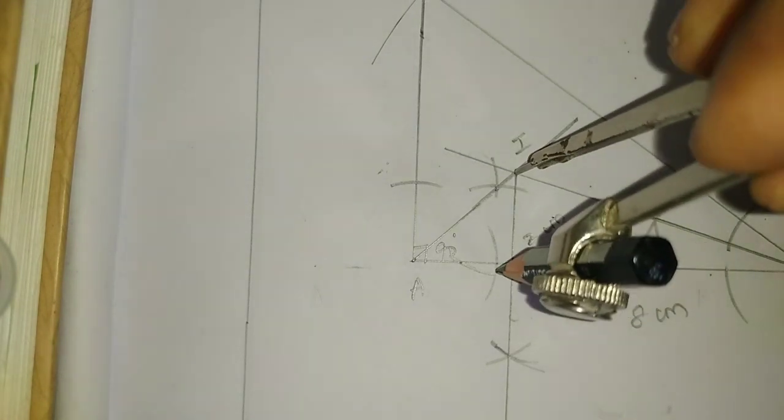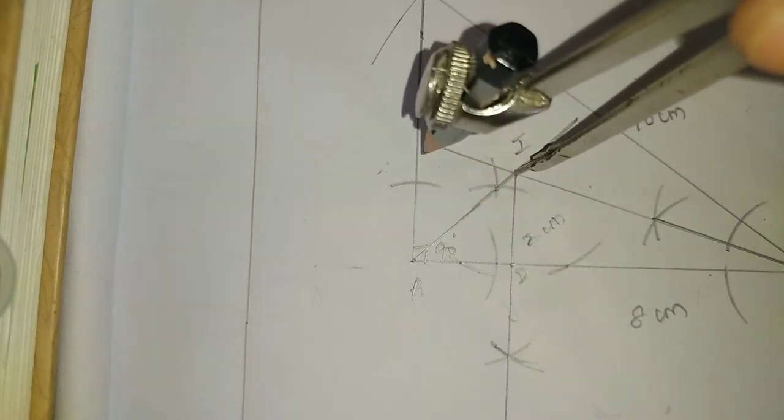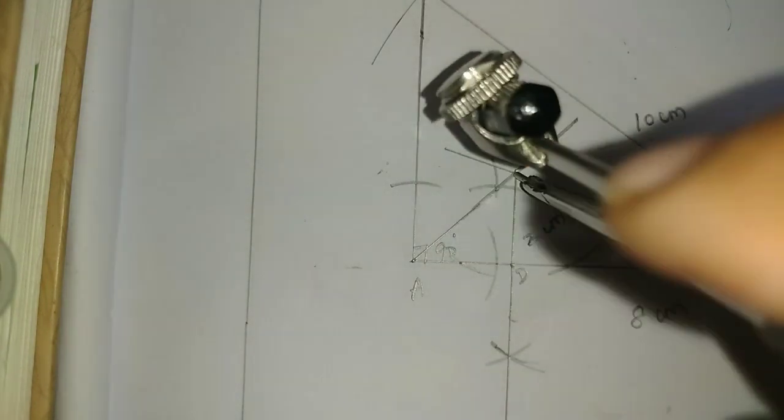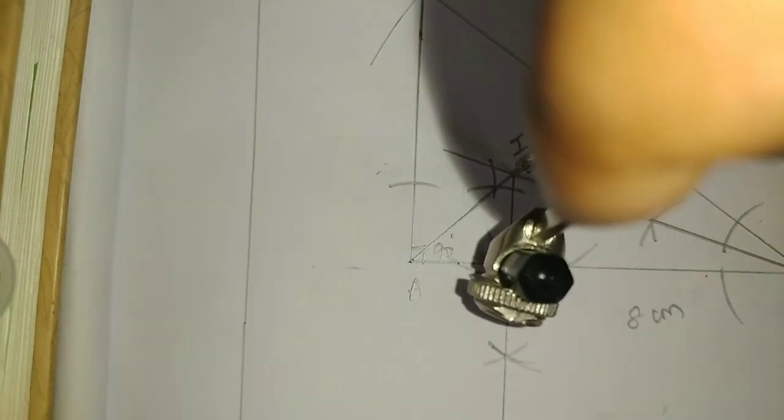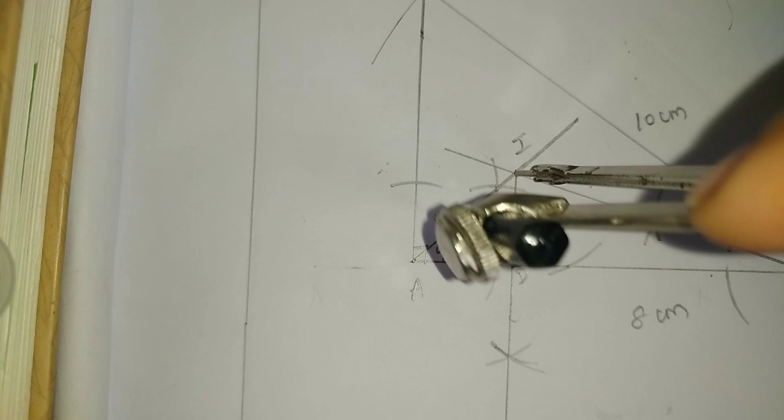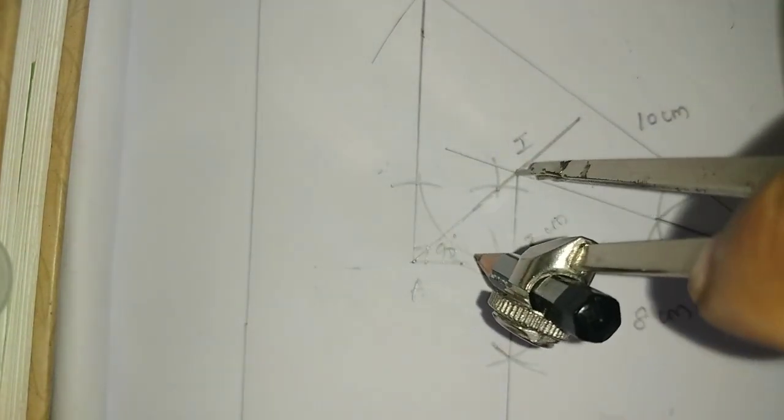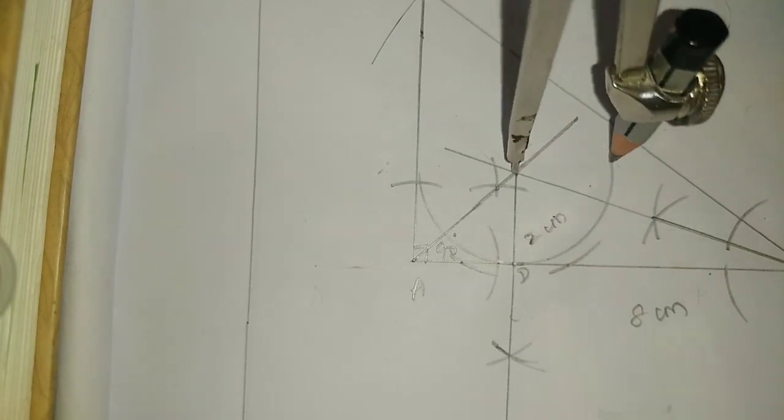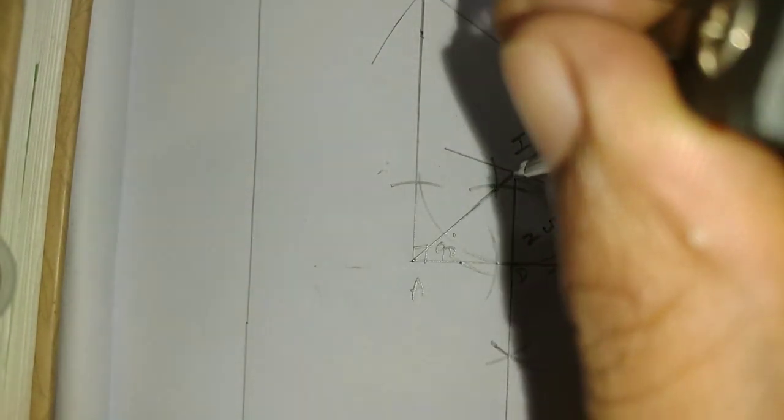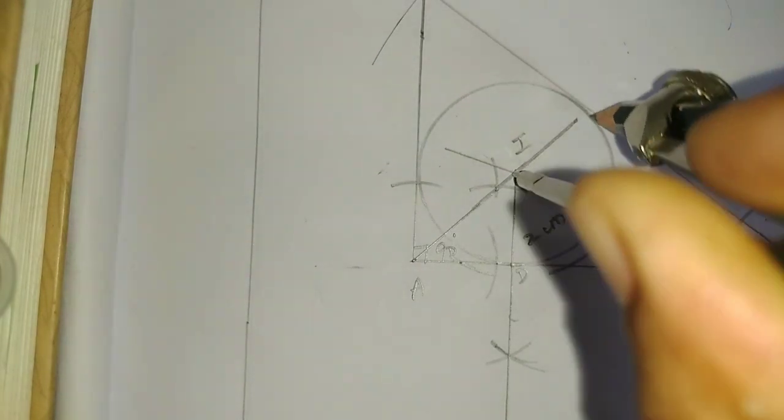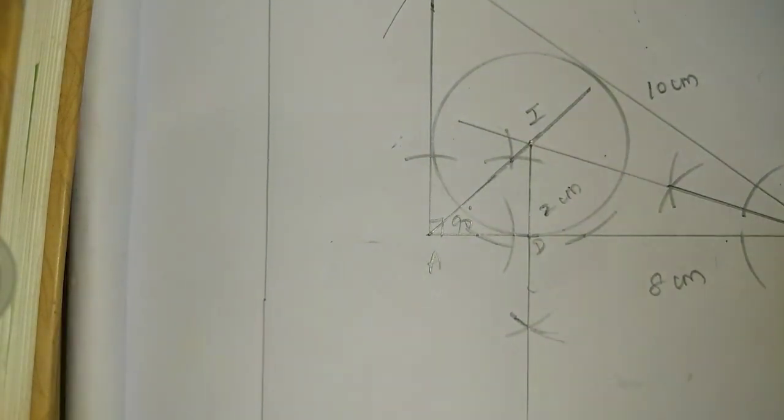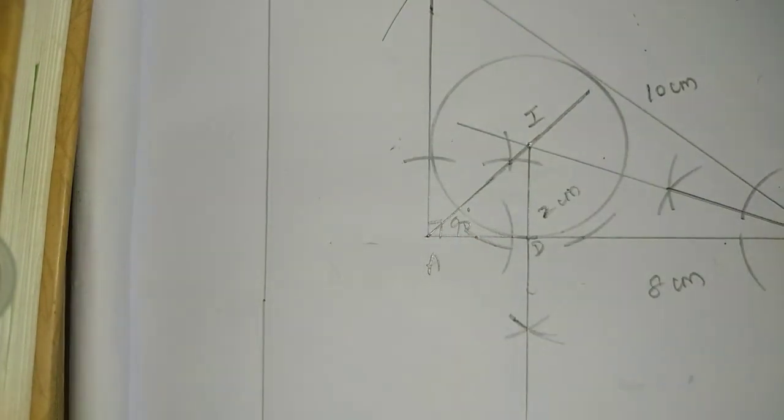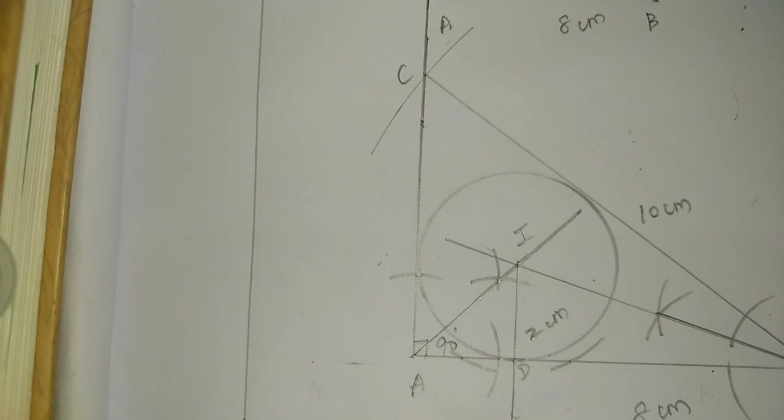What is the measure of I? The measure of I, D measure. Centre circle, it will touch on the three sides. Circle here, here is the incircle. Now incircle is complete. Thank you.